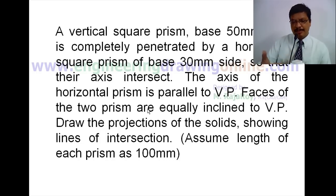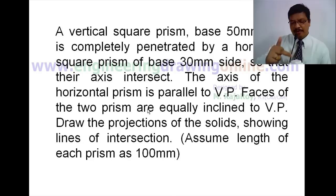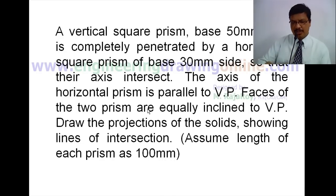Now, how to start this problem. One prism is vertical, so we will get the true shape and size of its base in the top view. We start from the top view of the vertical square prism. For the horizontal square prism, the true shape of its base is available only in the side view. So first draw the top view of the vertical square prism, then project the front view, then draw the side view, and after that start drawing the projections of the horizontal square prism.